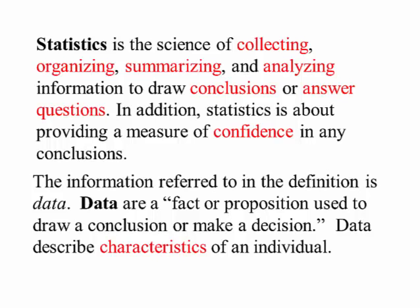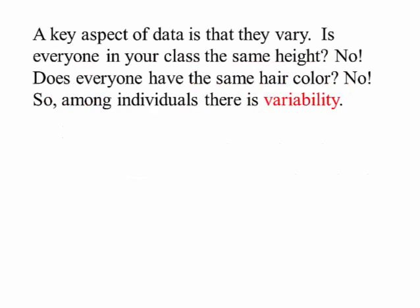Data describe characteristics of an individual. For example, in the student survey, your height, your age, how far you live away from Cincinnati State — all are examples of data. A key aspect of data is that it varies. Is everyone in our class the same height? No. Does everyone have the same hair color? No. So among individuals there is what we call variability.